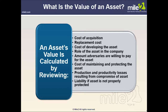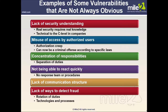Also consider the amount adversaries are willing to pay for the asset, the cost of maintaining and protecting it, production and productivity losses resulting from compromise, and the liability if the asset is not properly protected. Examples of vulnerabilities not always obvious include lack of security understanding — real security requires real knowledge from the technical level to the C-level, and sometimes there's a loss in communication between the technical side and your CIOs and CEOs.